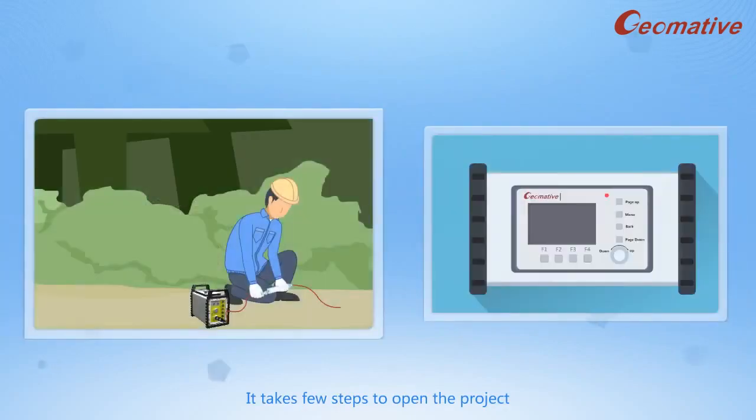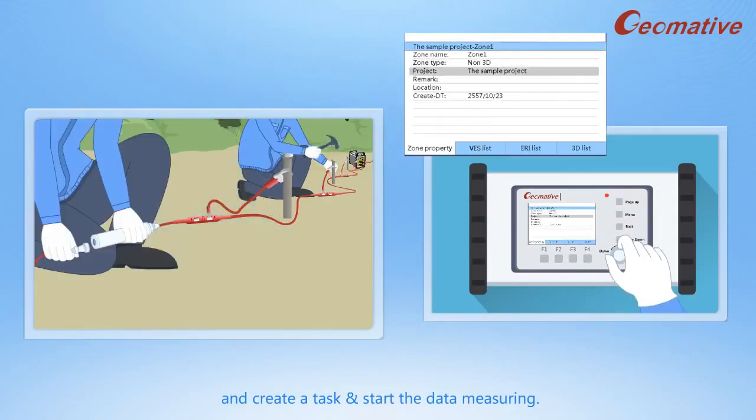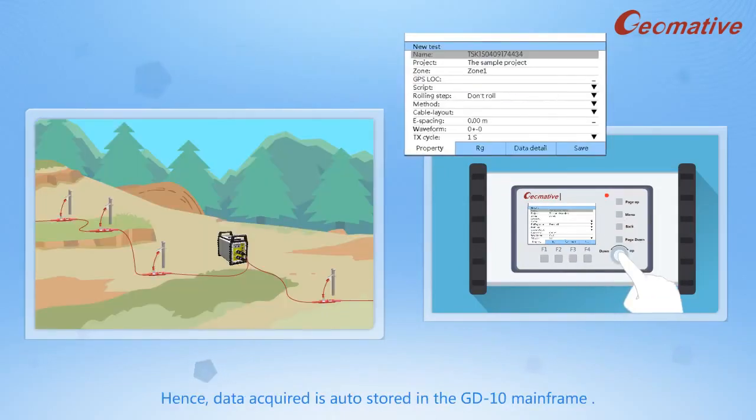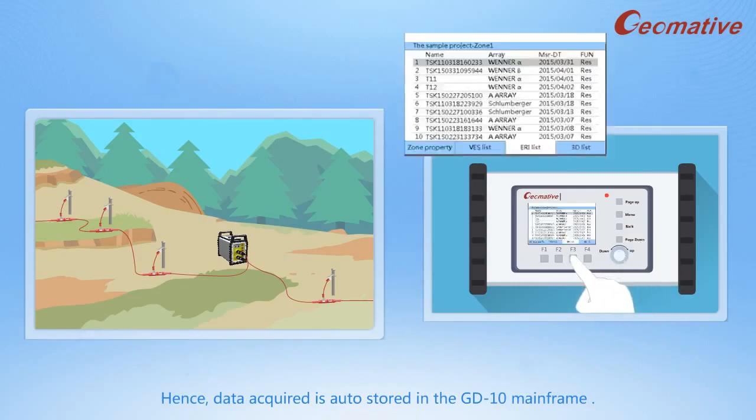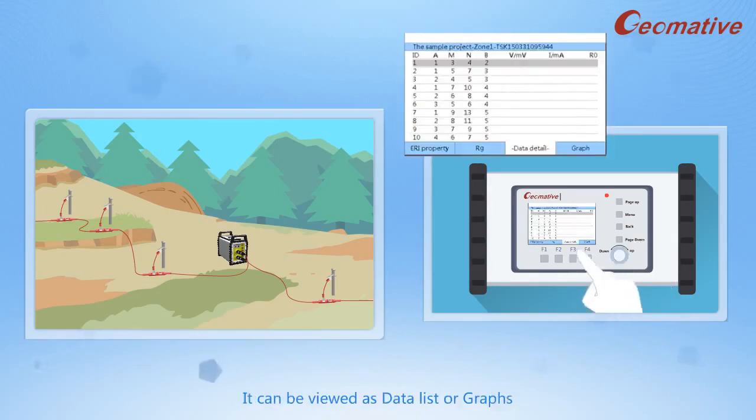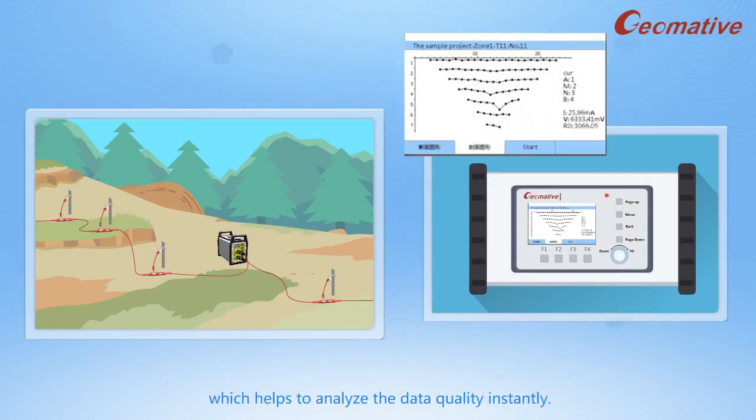It takes a few steps to open the project and create a task and start data measuring. Hence, data acquired is auto-stored in the GD-10 mainframe. It can be viewed as data list or graphs, which helps to analyze the data quality instantly.